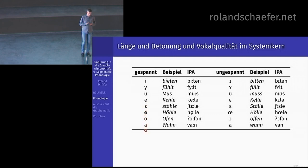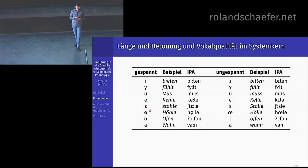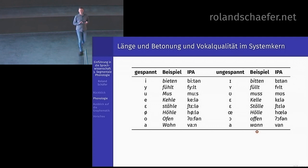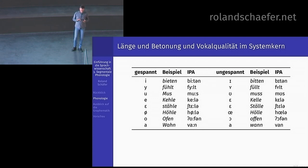Gespannte Kurze gibt es im erweiterten Wortschatz — also in Fremdwörtern und Lehnwörtern: »Lithographie«, »Hydraulik«, »Butan«, »Phenol«, »Ökonomie«, »Mesozoon«. Das sind gespannte Kurze — gespannt wie die hier, aber nicht lang. »Lithographie« heißt nicht »Lithographie« mit Langen, sondern »Lithographie« — gespannt, aber kurz. Im Kernwortschatz gilt: gespannte Vokale immer betont und lang; zu jedem gespannten gibt es einen entsprechenden ungespannten, der immer kurz ist. Die Länge muss also nicht im Lexikon markiert werden — sie ergibt sich automatisch, wenn das Ding gespannt ist und betont wird.